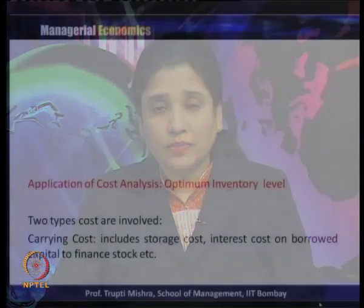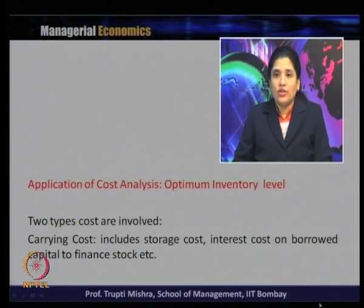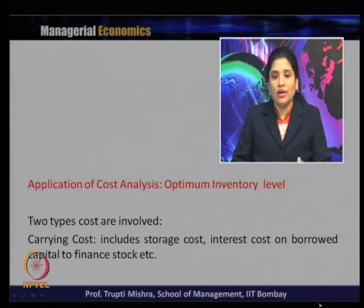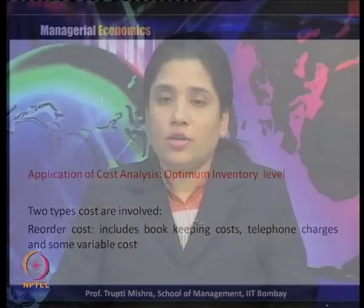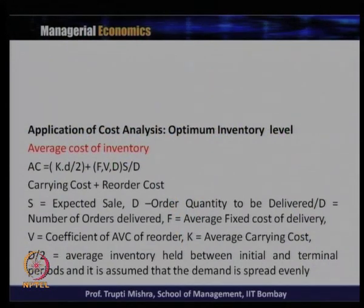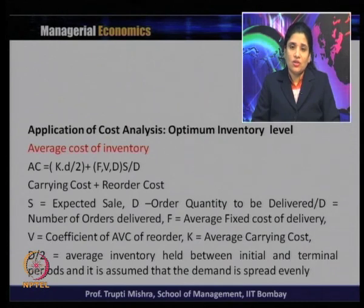There are two types of cost involved in finding the optimum inventory level. First is carrying cost, which includes storage cost and interest cost on borrowed capital to finance stock. Second is reorder cost, which includes bookkeeping cost, telephone charges, and some variable costs. Both must be part of the cost function. The average cost of inventory is: AC = k·(D/2) + (f + b)·(D·S)/t, where the first part is carrying cost and the second part is reorder cost.